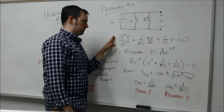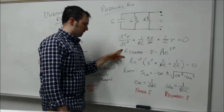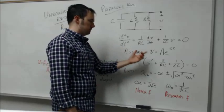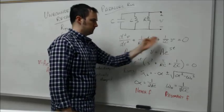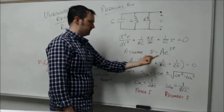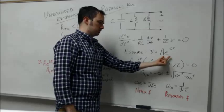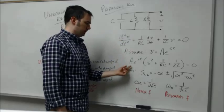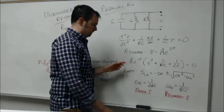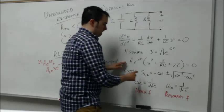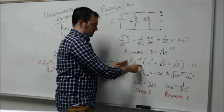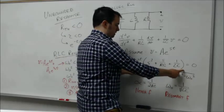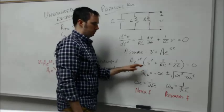If we assume that the solution to this ordinary differential equation takes this form, A times e to the st, and then we plug this back into this equation, we came up with the overall equation which would have an exponential term, and then this term here is called the characteristic equation: s squared plus s over RC plus one over LC.